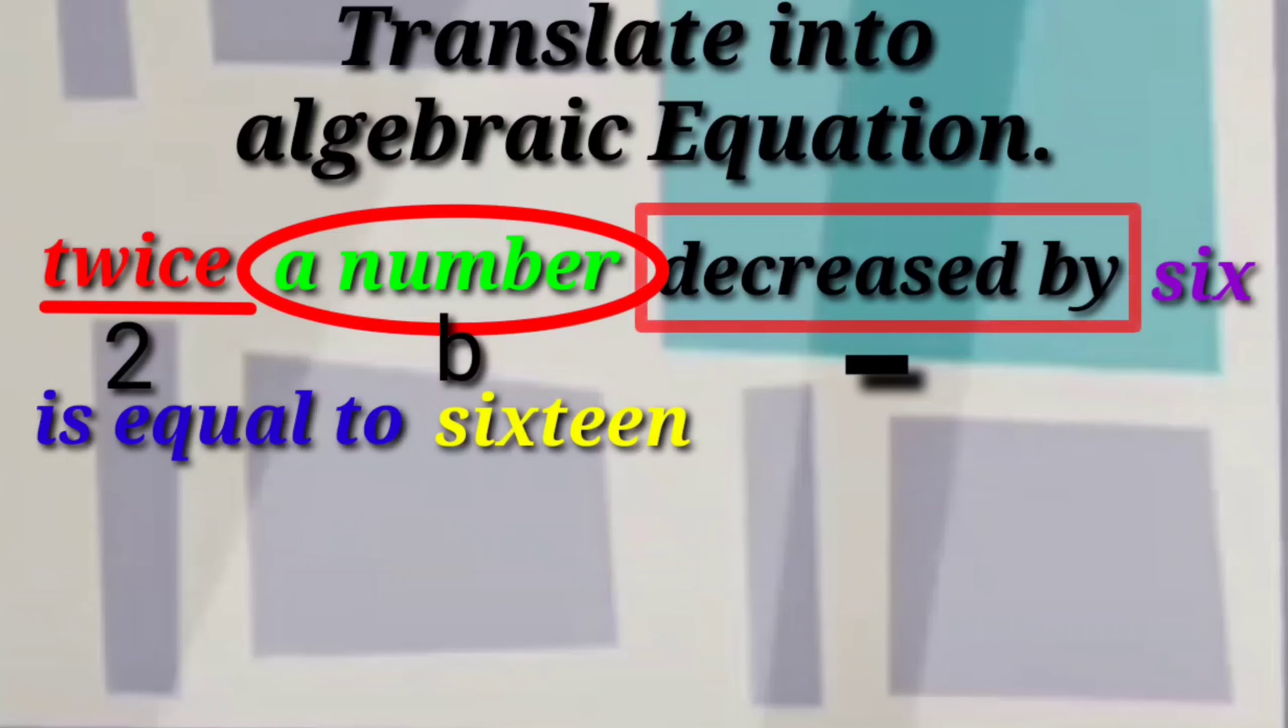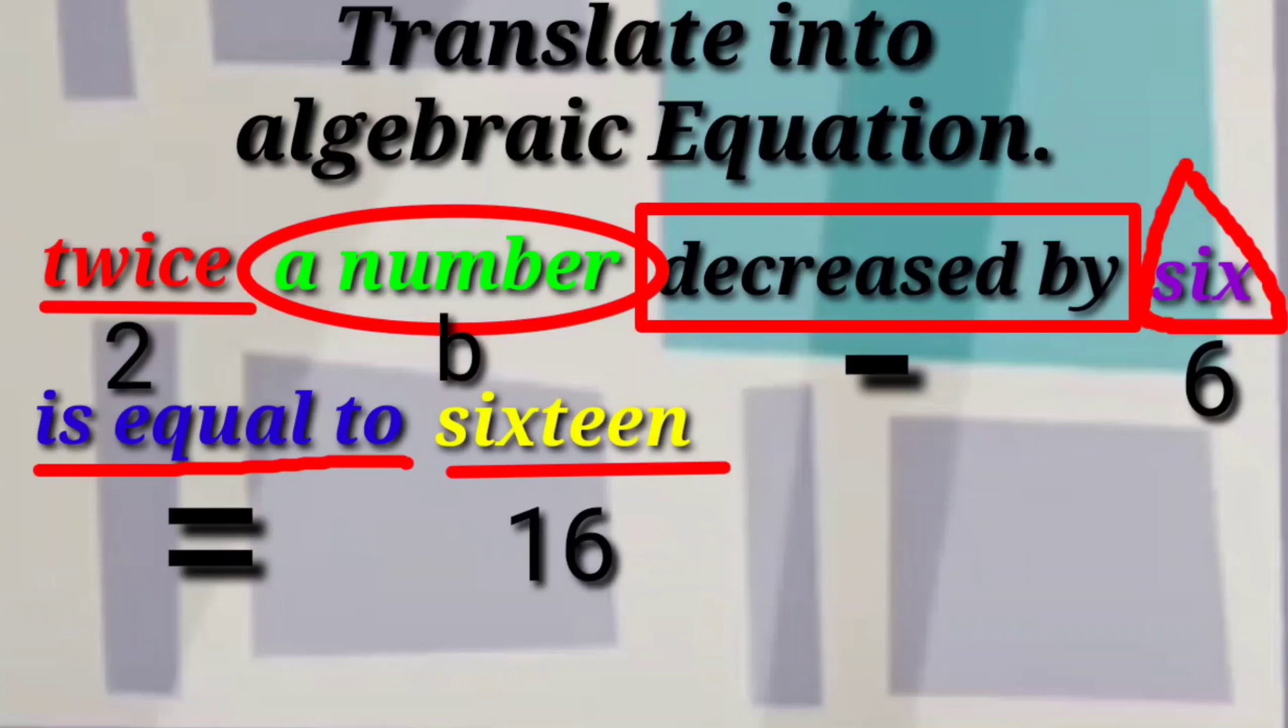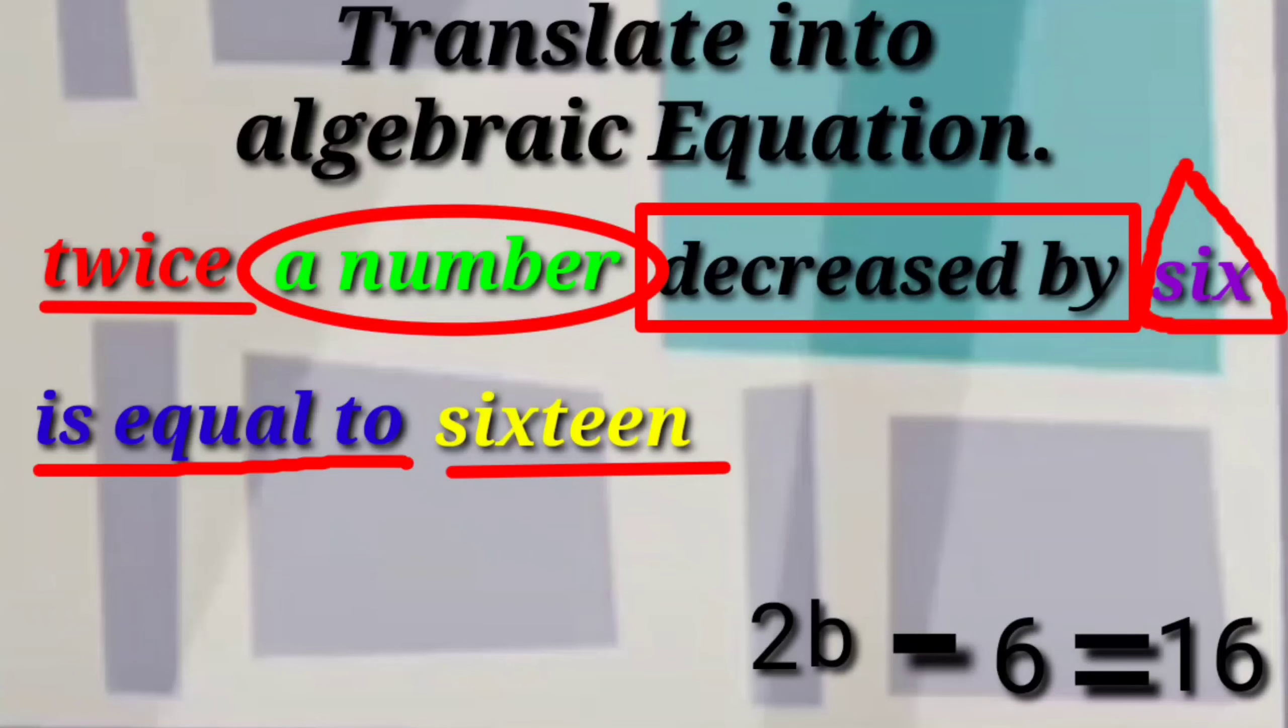Decreased by means subtract it from twice a number. Six is the number you are going to subtract from twice of a number. I change six into number figure. Is equal to is equal symbol. Sixteen is sixteen in figure. Therefore, the algebraic equation is two B minus six equals sixteen.